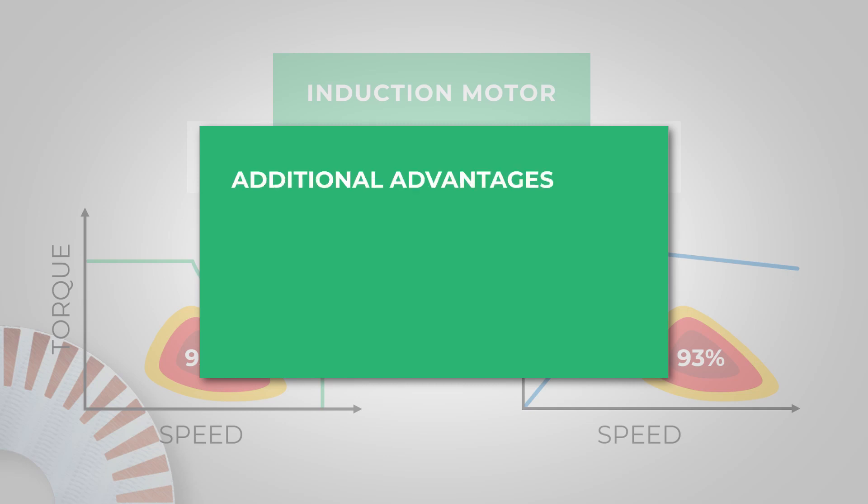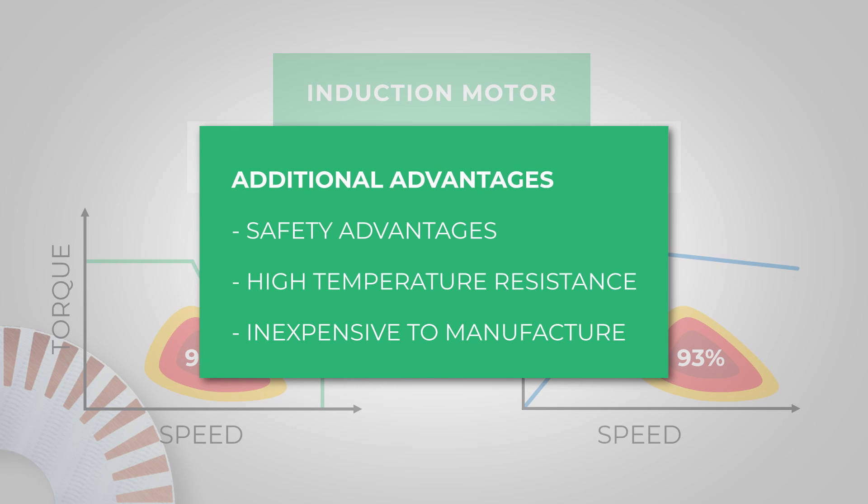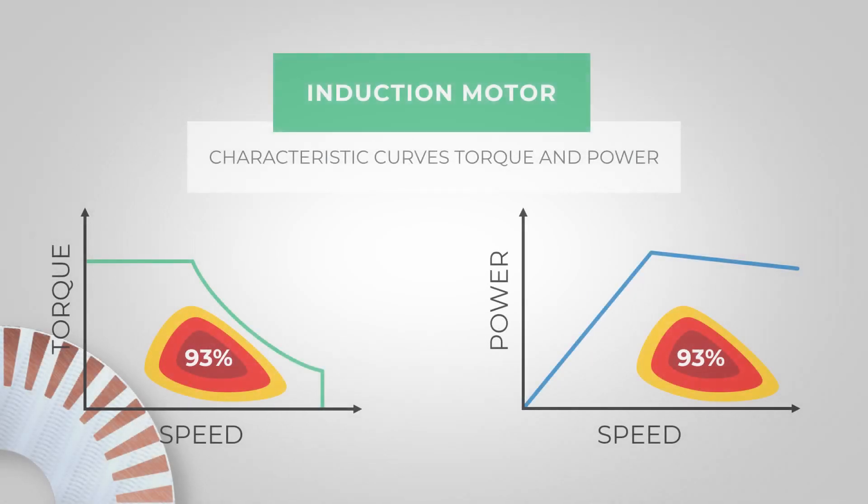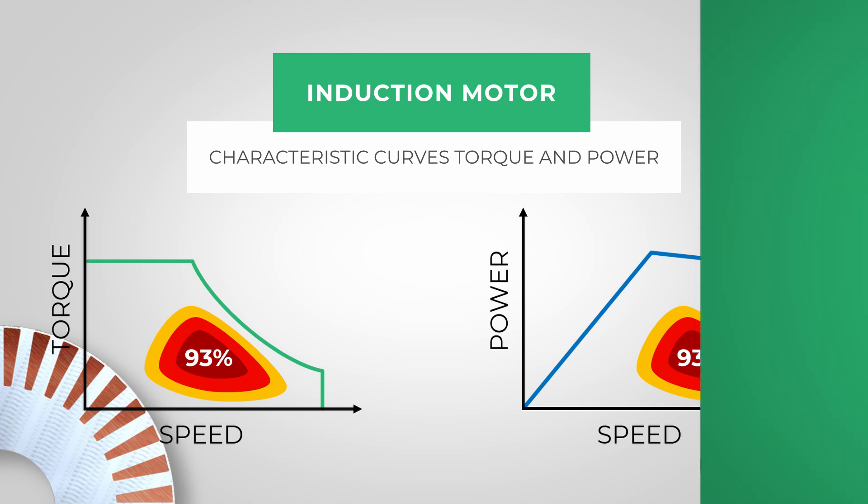The induction motor also has safety advantages, a higher temperature resistance, and is very inexpensive to manufacture because the motor does not contain permanent magnets. If you want to understand exactly how an induction motor works, you can find a detailed video in the description.